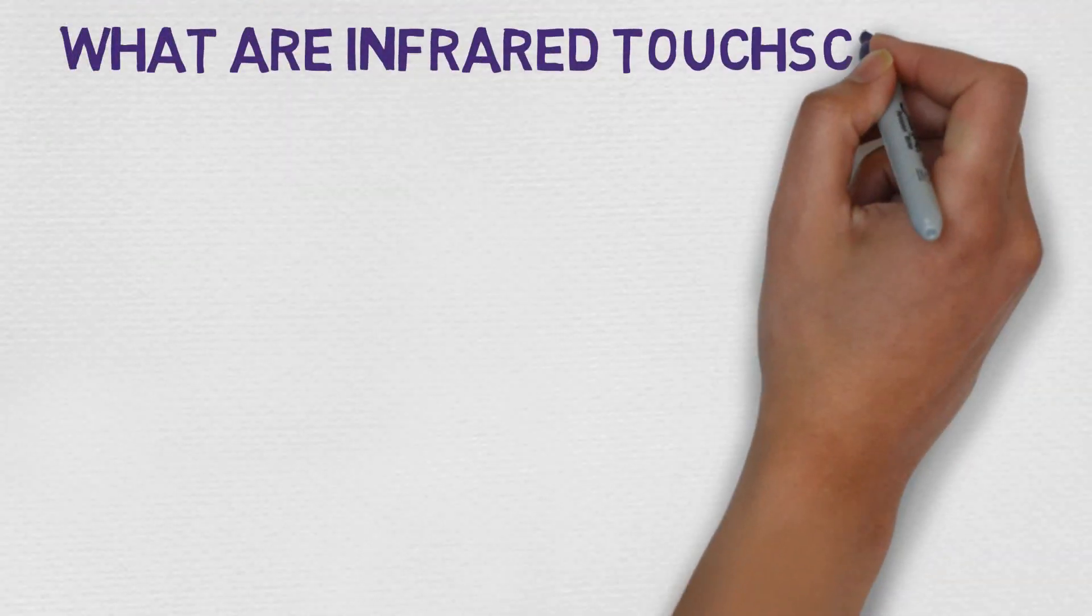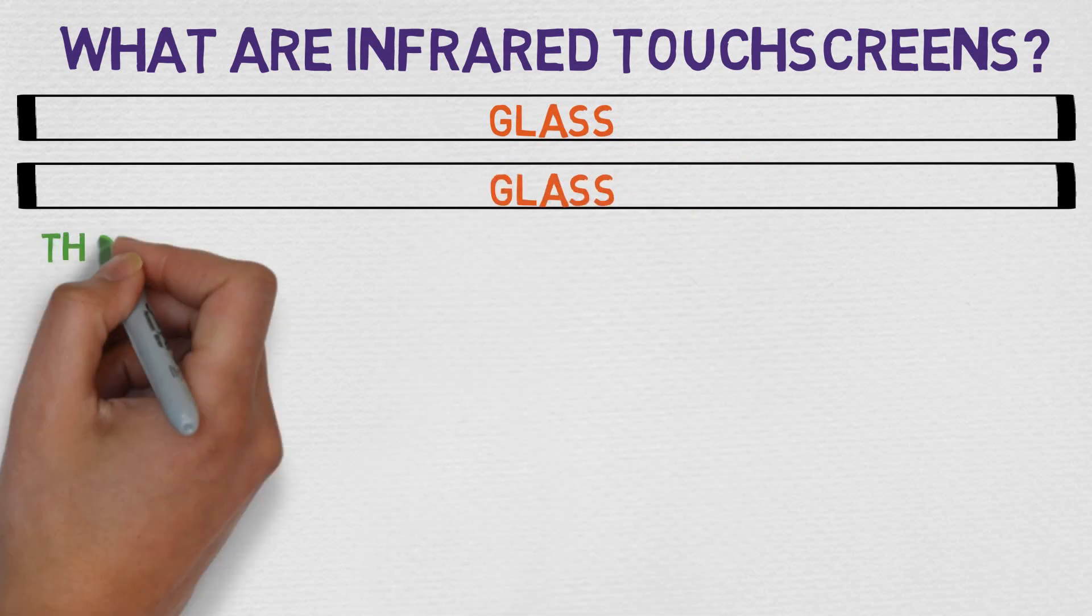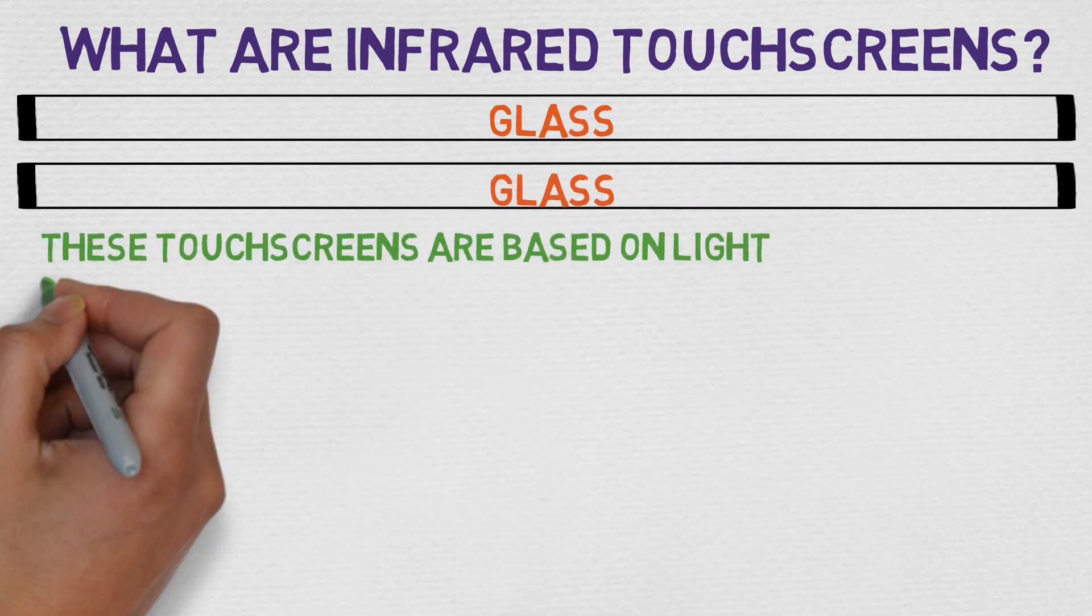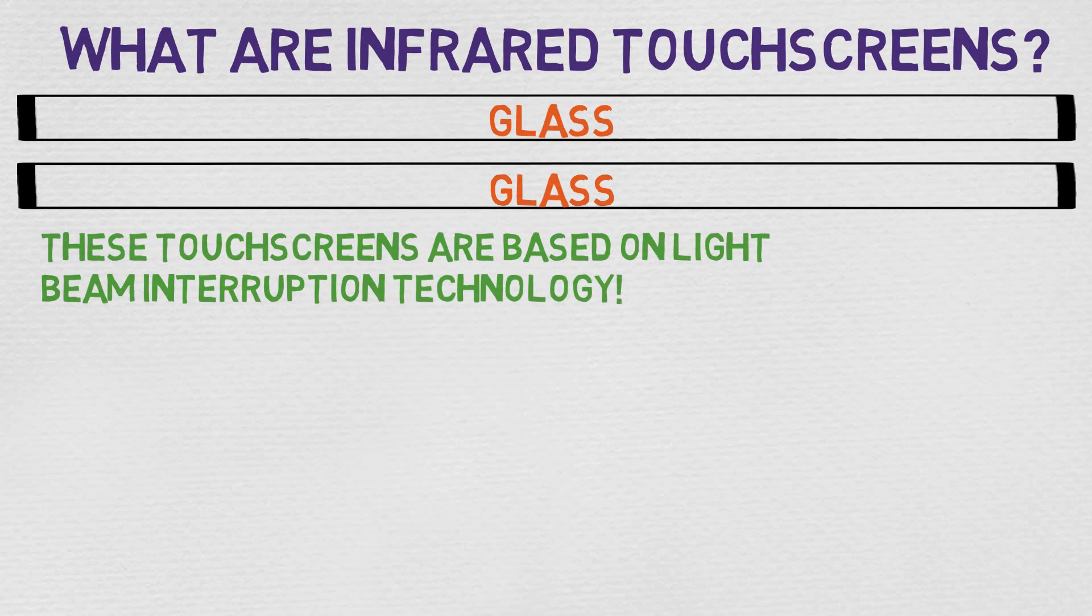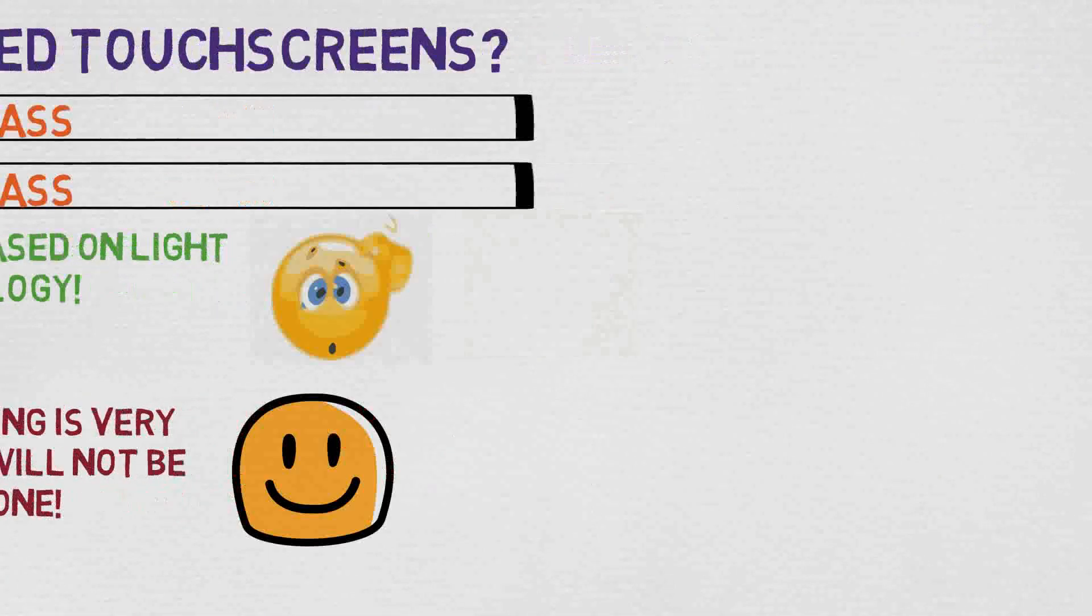So what are infrared touchscreens? They are made up of glass from both the top and the bottom. They are touchscreens which are based on light beam interruption technology. This touchscreen's working is very easy to understand, so just don't worry.